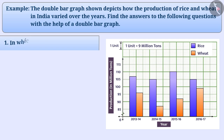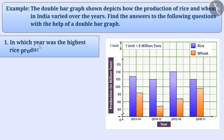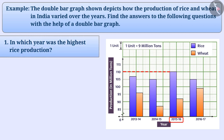In which year was the highest rice production? Here, the production of rice is denoted with blue bars. The longest blue bar is for the year 2015-2016. We can say that the maximum production of rice was done in the year 2015-2016.